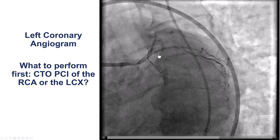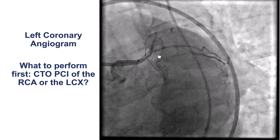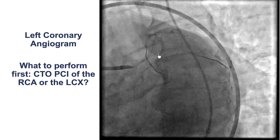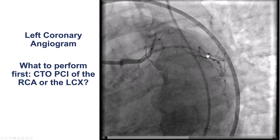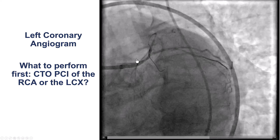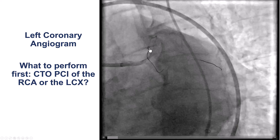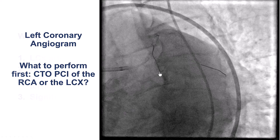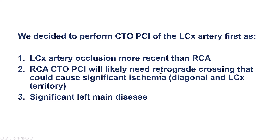The question here is about revascularization and whether to perform PCI of the right coronary artery or the circumflex first. There are some epicardial collaterals filling the circumflex, but there is severe left main disease and significant disease in the LAD and diagonal. The decision was to try the circumflex first because it seemed to be more recent, and going to the right coronary artery CTO would likely need retrograde crossing that could cause significant ischemia given the severe left main disease.